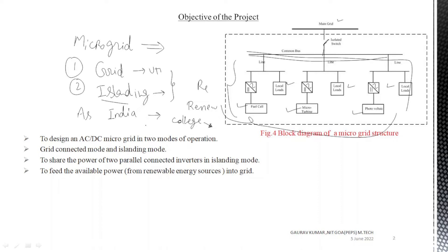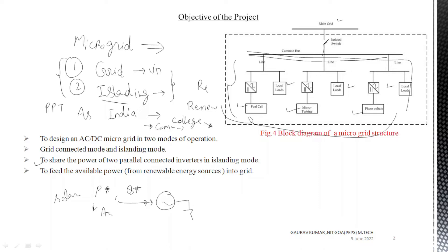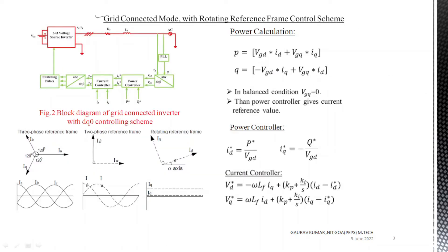There are different types of technologies inside the microgrid, such as different communication techniques and controlling techniques. In this lecture I will discuss the two different modes: number one, grid connected mode, and number two, islanding mode. In grid connected mode, the available power from the renewable sources is fed to the utility grid — the active and reactive power from solar or other renewable energy sources.